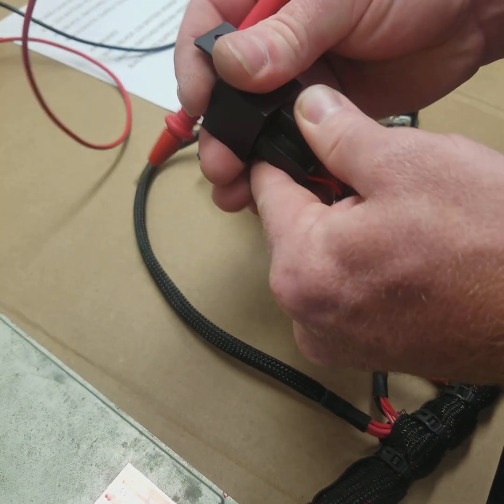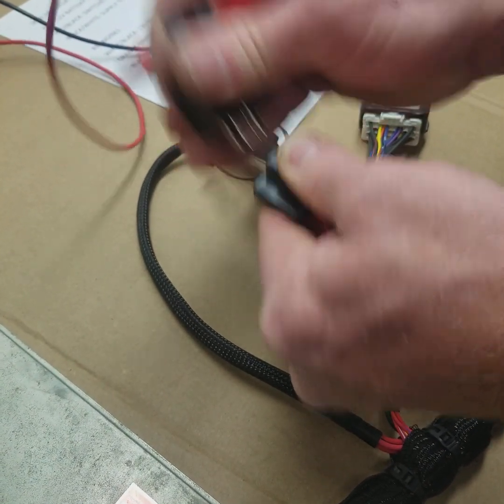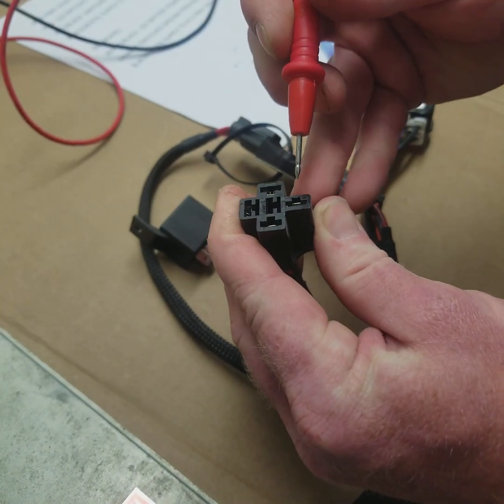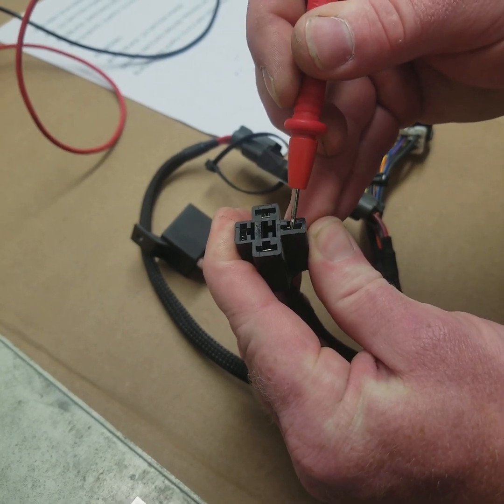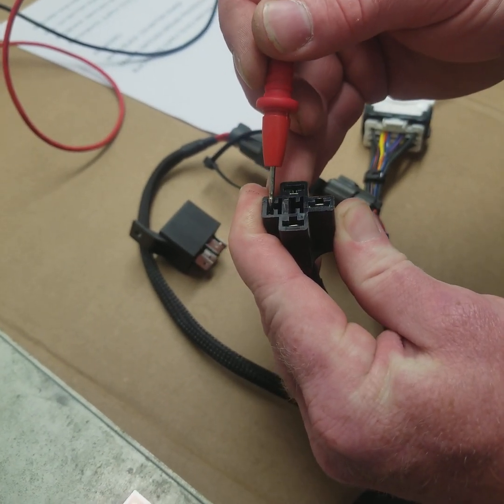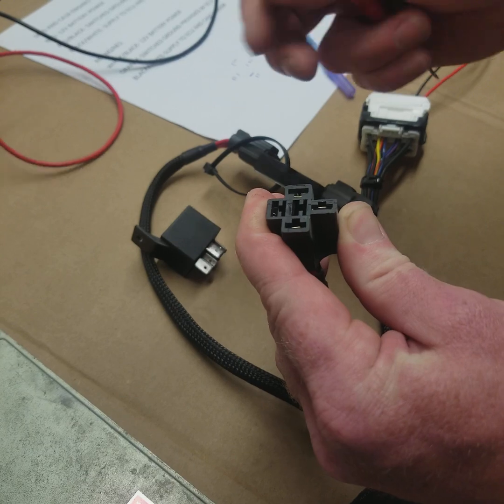If you have to, what you can do is you can unplug the relay and you can jump this terminal 30 to that terminal 87, and that will power on the engine harness.